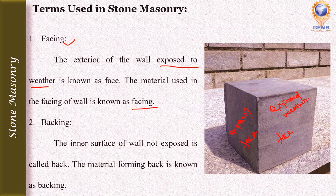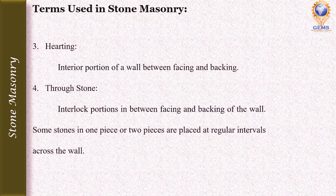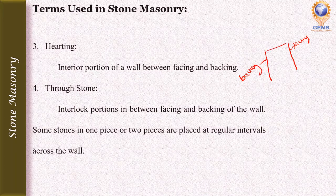The interior of the wall does not expose to weather — that is called the back. Backing is the inner surface of the wall not exposed to weather; the material forming the back is known as backing. The third term is hearting — it is the interior portion of the wall between facing and backing.